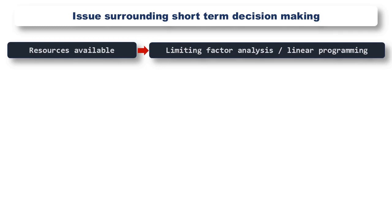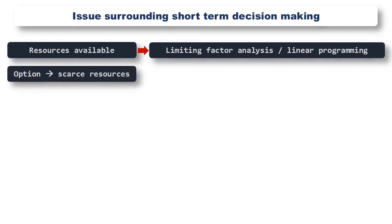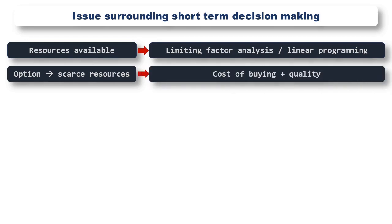Further information on these two techniques can be found on the videos covering these topic areas. These techniques would be used when considering which products to make in-house and in what priority order. We also need to think about whether there are other options available to us when resources are scarce — should we make the products in-house, or should we pay to have them made?